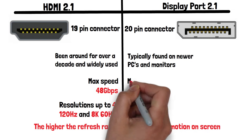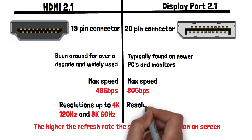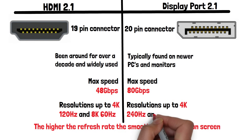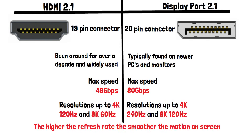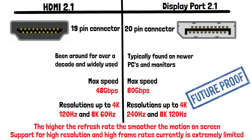DisplayPort 2.1 has a max transmit speed of 80Gbps, and supports higher resolutions with higher refresh rates — the latest version is capable of 4K resolution at 240Hz refresh rate, and 8K resolution at 120Hz. While support for these incredible resolutions and frame rates is currently extremely limited, it does provide great future-proofing as these start to become more widely available over the next decade or two. It also supports variable refresh rates, which can reduce screen tearing and improve the overall experience when gaming.